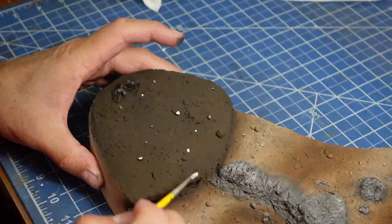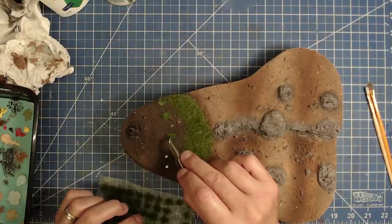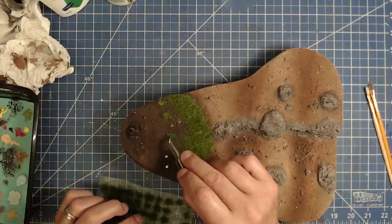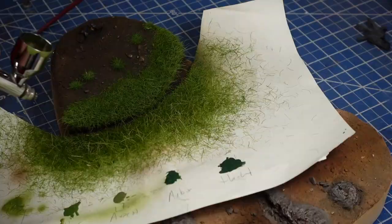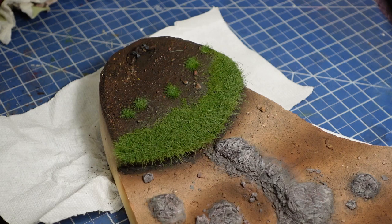The edge of the bank gets layers of static grass, starting with short lengths and getting progressively longer as we approach the edge of the river where it would get more light. A few tufts are added deeper in the forest. The grass gets a spray of green to tie it all together. The forest floor gets a spritz of hairspray, then some ground leaf litter to finish the look.